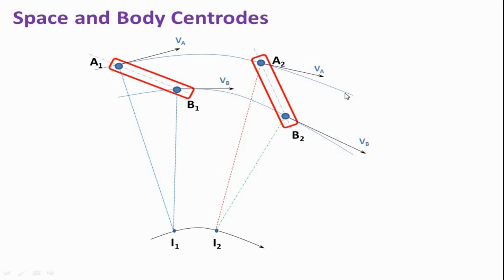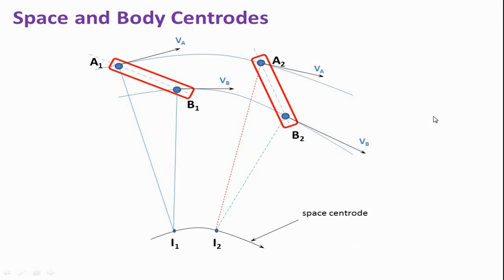If we locate the instantaneous center for a third position, it will appear somewhere further along. The curve connecting every instantaneous center is the space centroid — the locus of all instantaneous centers. When link A2 B2 moves to third position A3 B3, we get instantaneous center I3. This curve is the space centroid. Now for the body centroid: for link A1 B1, the body centroid is located at C1, coinciding with I1.